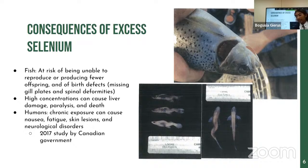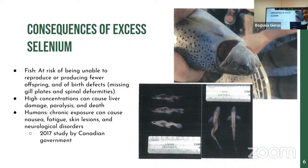Excess selenium has many negative impacts. Fish with too much selenium are at risk of reduced offspring and reproductive issues, as well as birth defects — as shown in the picture where a fish is missing a gill plate due to selenium poisoning. The bottom picture shows spinal deformities caused by selenium poisoning. High concentrations can also cause liver damage, paralysis, and death. According to a 2017 Canadian government study, chronic exposure in humans can cause nausea, fatigue, skin lesions, and neurological disorders.